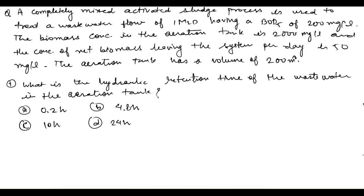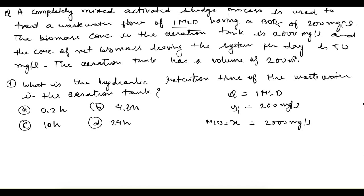Let's see some previous year questions from the activated sludge process. This one says a completely mixed activated sludge process is used to treat a wastewater flow of 1 MLD having a BOD5 of 200 mg/L. The biomass concentration in the aeration tank (MLSS) is 2000 mg/L. The concentration of net biomass leaving the system per day (XW) is 50 mg/L. The aeration tank volume is 200 m³.